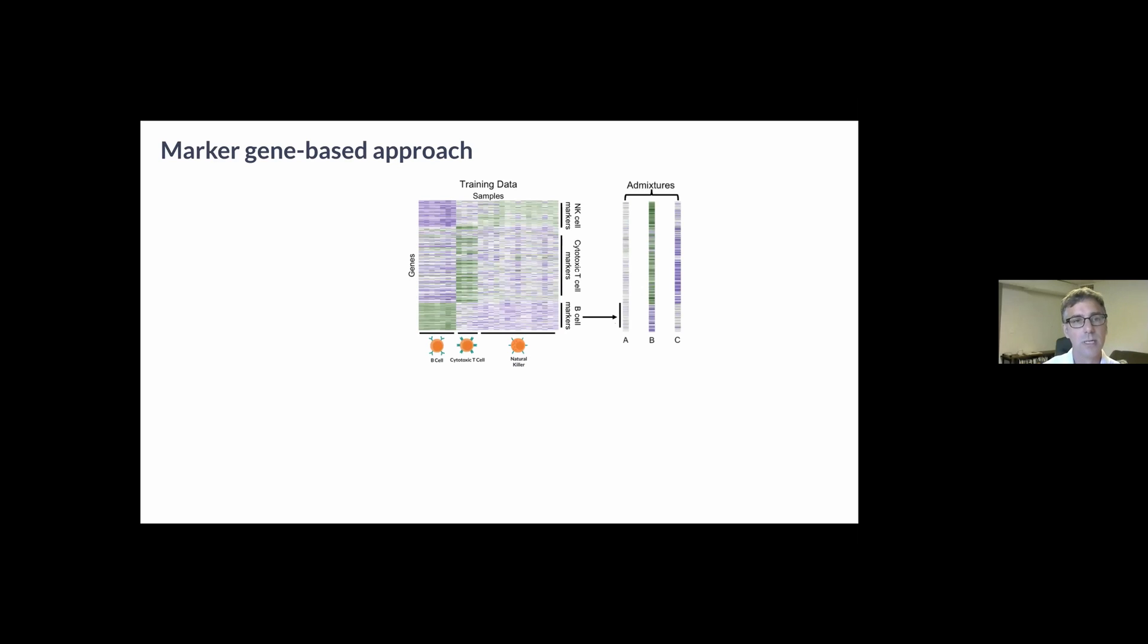These methods tend to perform differential expression analysis, certainly MCP-counter does, across the purified samples to define B cell markers and then similarly for other markers. When presented with a bulk or admixed sample, MCP-counter defines a B cell score simply as the summary of the B cell markers in that sample. In the case of MCP-counter, that summary is the mean expression within the gene set.